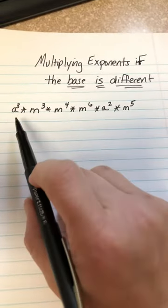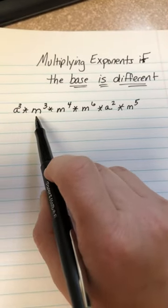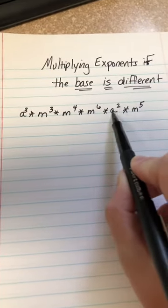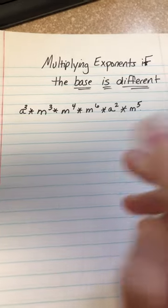We notice that first of all, I have a to the third times m to the third times m to the fourth times m to the sixth times a to the second times m to the fifth.